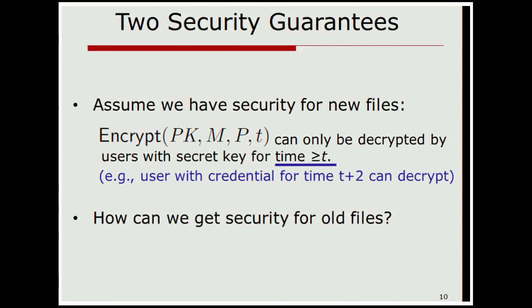Let's look a little deeper. Let's say for the moment we were able to solve the second problem — security for new files. In other words, we have a way to encrypt to a particular time t, and it can only be decrypted by users with a secret key for a time greater than or equal to t. If you have a time t+2 key, you can decrypt; if you have a time t-1 key, you cannot. This solves the future problem. Now we want to see how we can get security for old files.